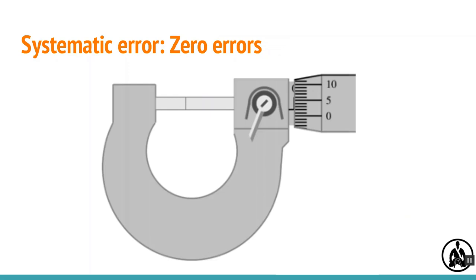Zero errors are also systematic errors. Zero errors are what you get when your measuring instrument doesn't read zero before you make the measurement.